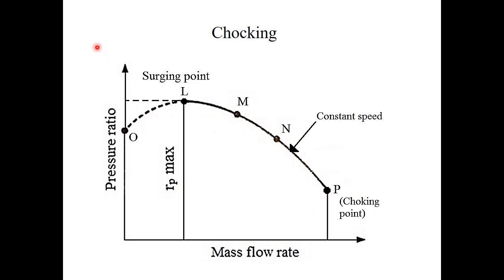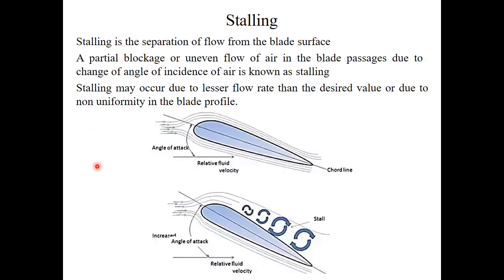Stalling is the separation of flow from the blade surface. A partial blockage or uneven flow of air in the blade passages due to a change in angle of incidence of air is known as stalling. Stalling may occur due to a lesser flow rate than the desired value or due to non-uniformity in the blade profile. As the angle of attack increases, separation of flow from the blade surface occurs. This concludes module 6 of subject ME206 Fluid Machinery.